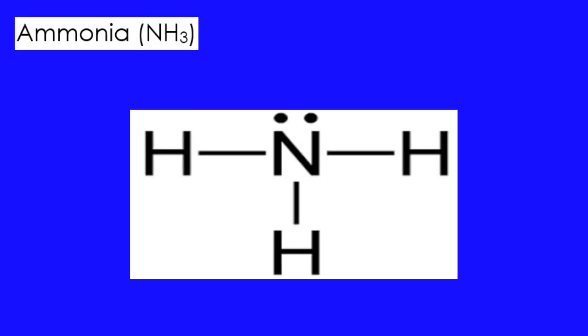Number six: ammonia. The Lewis structure of ammonia shows three single bonds with hydrogen atoms bonded to a nitrogen atom in the middle, with a lone pair of electrons on top of the nitrogen atom.